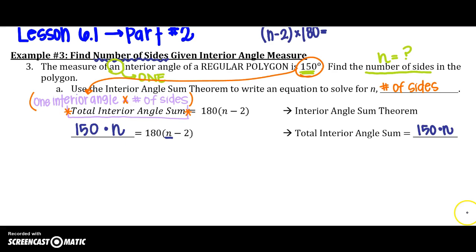So how do we solve that? We have n on both sides, so let's simplify. This left side will be 150n equals, and you can distribute that 180 into that parentheses, so 180n minus 180 times 2 would be 360.